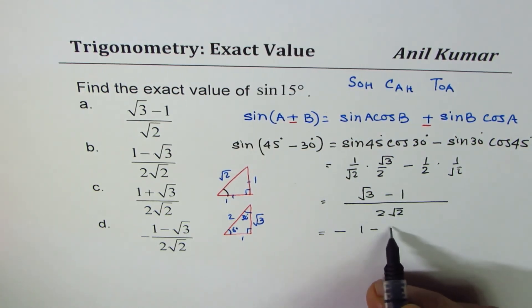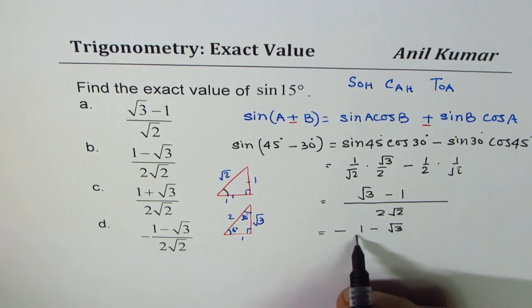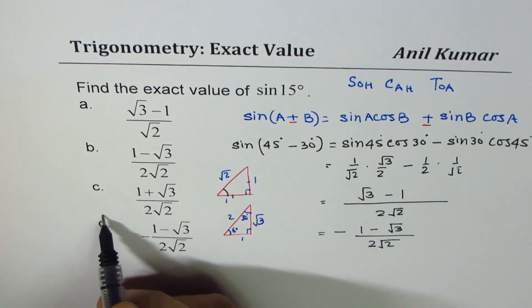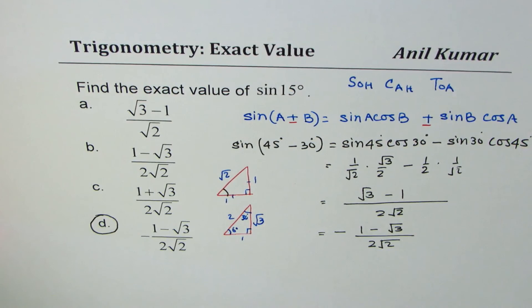The last option is written in a different way. It is kind of taking negative common. You could write this as 1 minus square root 3. So that's kind of a trick. We do have an option which matches. The only thing is think about taking negative common. In multiple choice questions sometimes we may give you choices like this also.